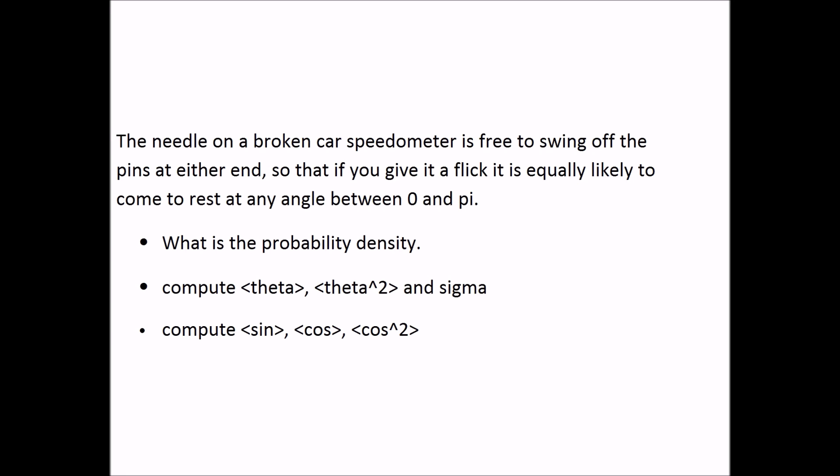The second question we're going to look at is the following. The needle on a broken car's speedometer is free to swing off the pins at either end, so that if you give it a flick, it is equally likely to come to rest at any angle between 0 and π. We're going to answer three questions: the probability density, the average of the angle, the average of the square of the angle, sigma (the standard deviation), the average of the sine of the angle, the average of the cosine, and the average of the cosine squared.